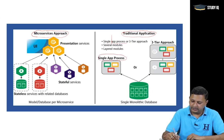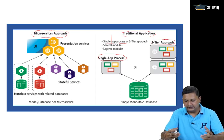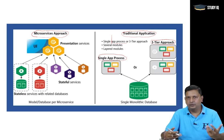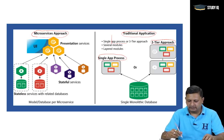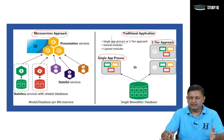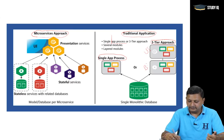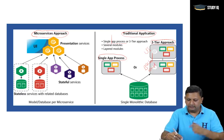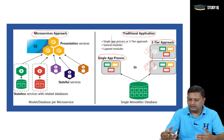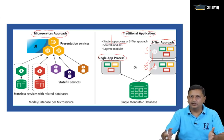Generally, traditional applications are of two types: single app process and the three-tier approach. The single app process means you have code for a UI, back end, and database layer connectivity, all together. From the last couple of years, we have also moved into the three-tier architecture, which consists of a UI layer, a back end, and a database.